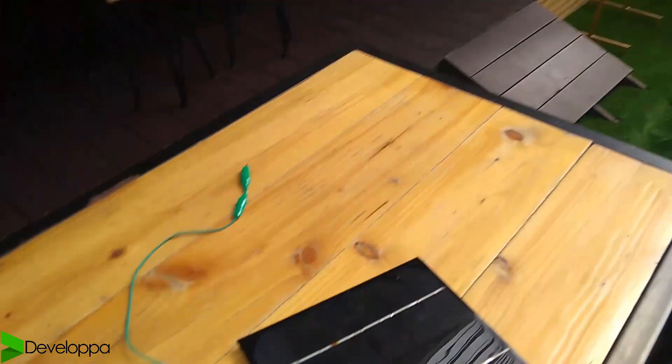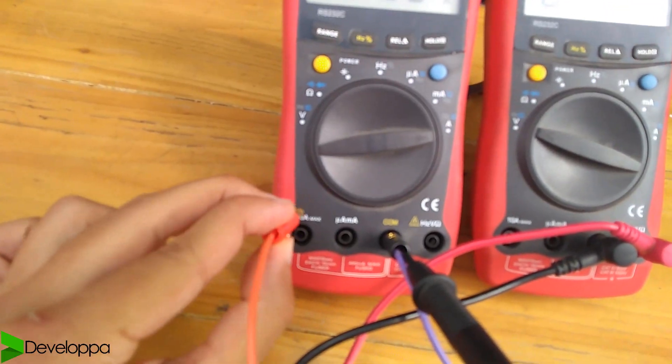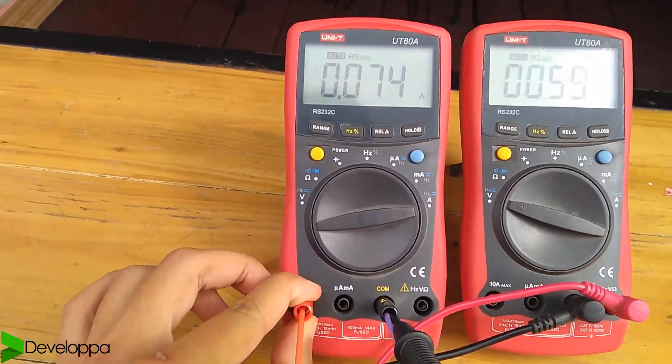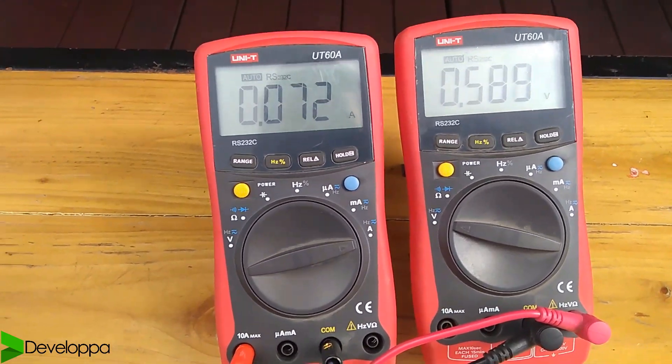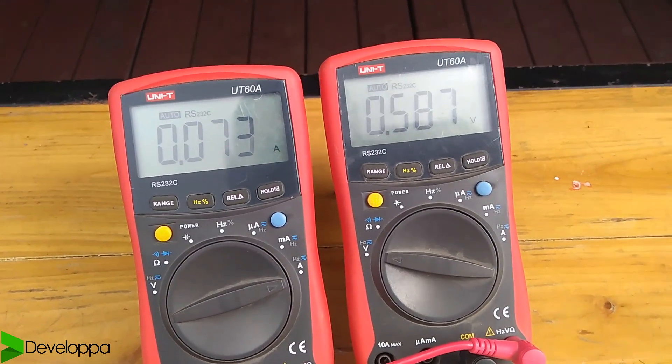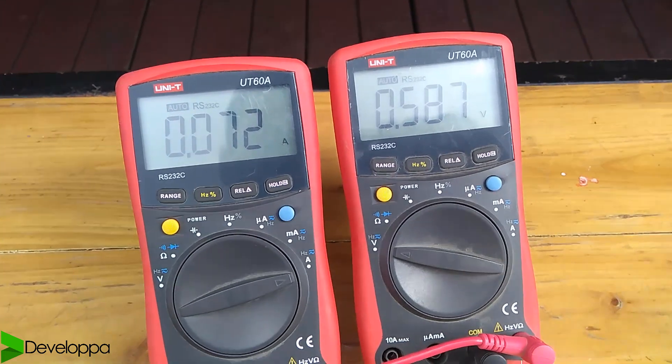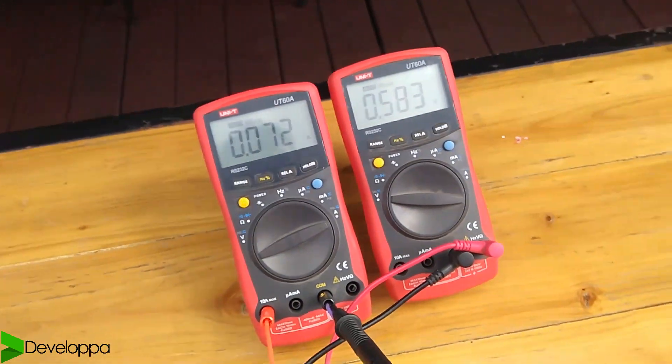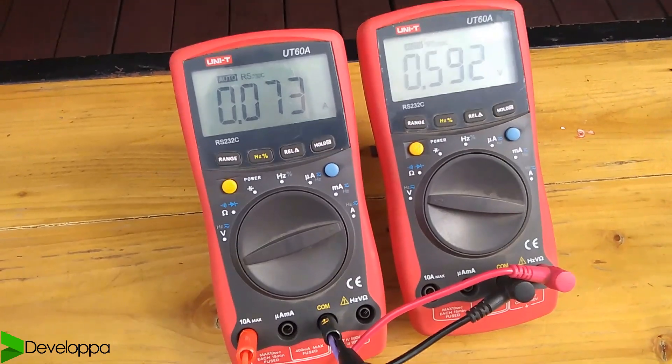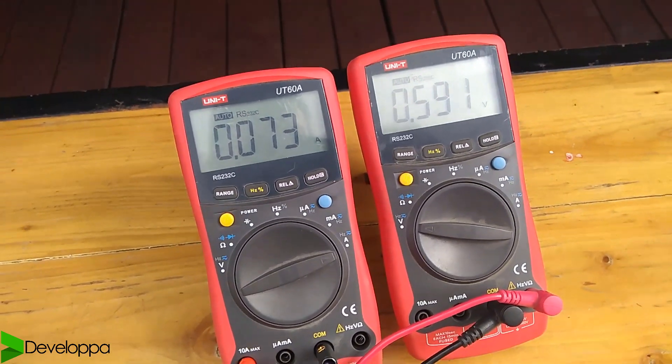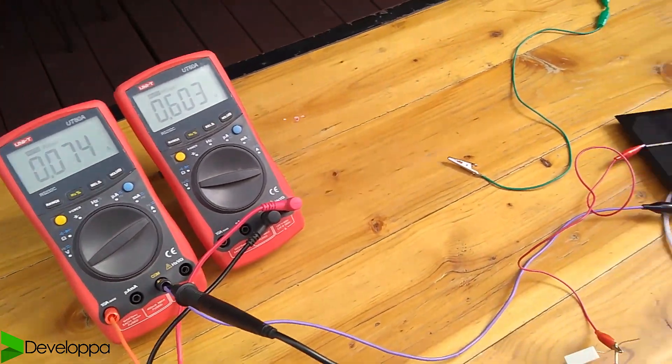When we connect the load, see what we get: we have 73 milliamps and our voltage has collapsed to 0.58 volts. So of course this is not going to charge the phone, because the phone needs at least 5 volts voltage input. So that could be one reason why it's not working.